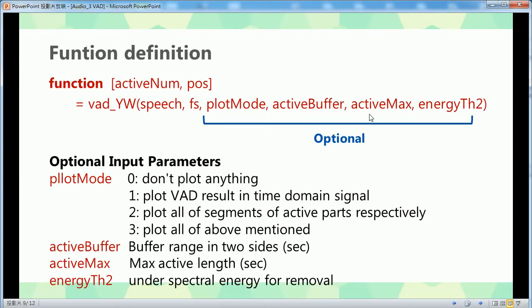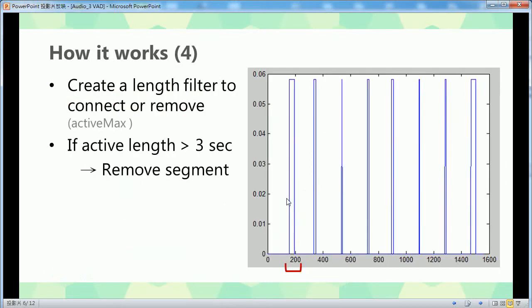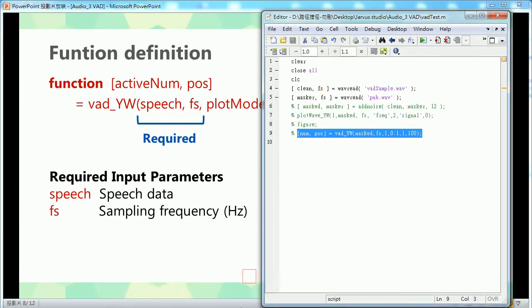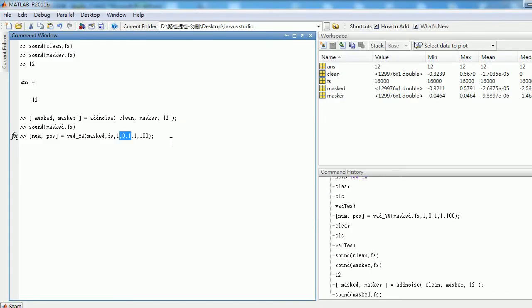And this is the maximum active length. Like if it's more than how many seconds it will remove because it's not my command. So now it's like only one second because Jarvis and Studio is very short. And this is a threshold you can see later for the energy wave.